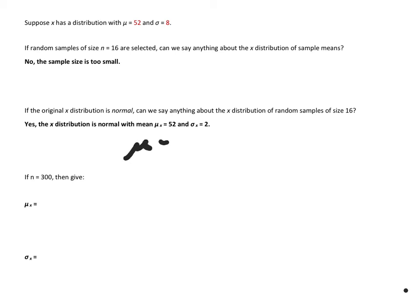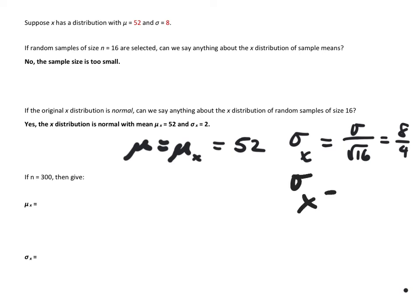Recall that μ is going to be equal to μ sub x̄, and so that's going to be 52. You do not have to worry about changing the mean. The standard error, now that's where you've got to watch it. The standard error of this one is 2, but let's think about why. σ is given and our sample size is 16, so this is 8 divided by 4, which is 2.